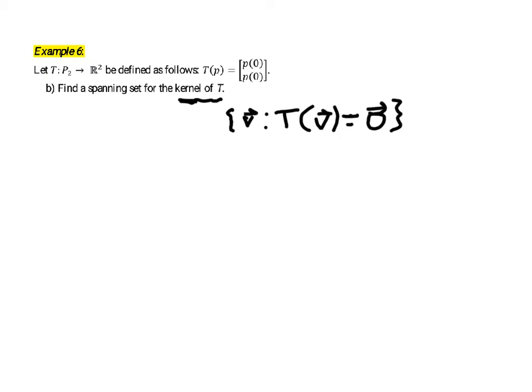So that's the kernel. In this case it's the set of polynomials such that T of p, which is equal to the vector [p(0), p(0)] by the definition of this vector space, is equal to the zero vector [0, 0].